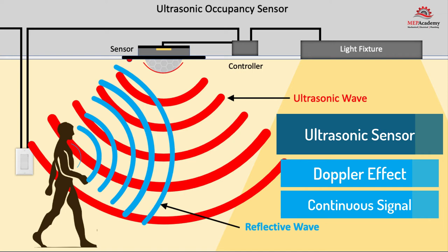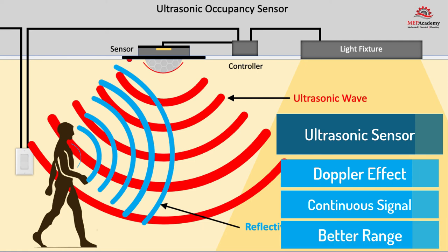This will require the ultrasonic sensor to most likely be hardwired to provide the constant energy for operation. Ultrasonic sensors are good at detecting movement that may occur behind a partition or bookcase, which isn't in the direct line of sight of the sensor. This technology will pick up slight movements of an occupant sitting at their desk reading a book or typing on their computer. The ultrasonic occupancy sensor also has a greater detection range than passive infrared sensors.